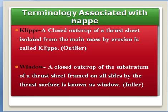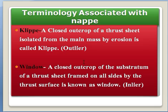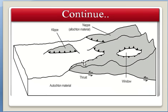Now the terminology associated with nappe. The first term is klippe — a closed outcrop of a thrust sheet isolated from the main mass by erosion is called a klippe, and a klippe is always an outlier. The second term is window — a closed outcrop of the substratum of a thrust sheet framed outside by the thrust surface is known as a window, and a window is always an inlier. See the next slide for a diagram.